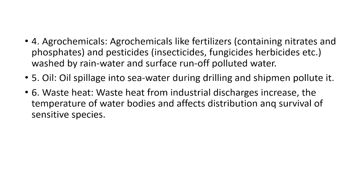Insecticides are chemicals used to kill insects; fungicides kill fungus; and herbicides kill unwanted plants growing between crop rows — a common example being congress grass. If used in excess and washed away by rainwater into a mainstream water body or nearby aquatic ecosystem, these agrochemicals are a main cause of eutrophication.